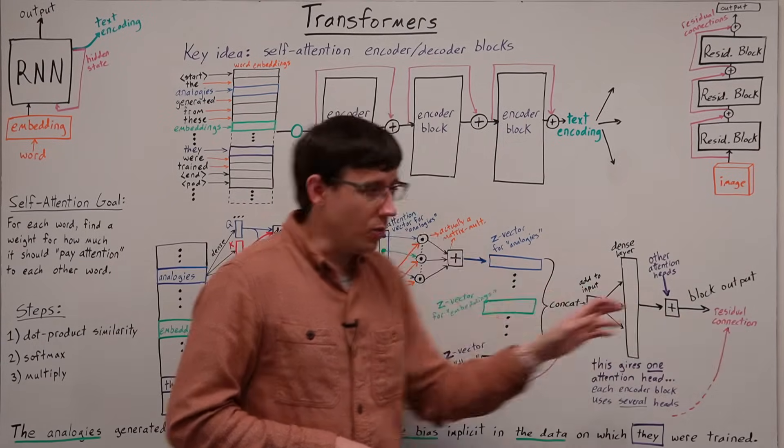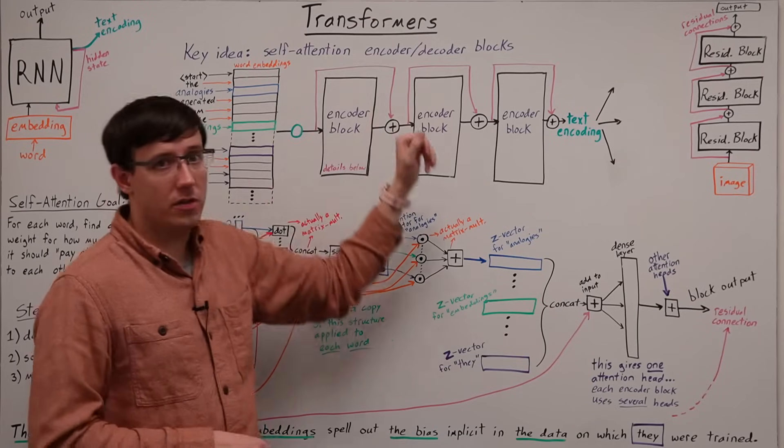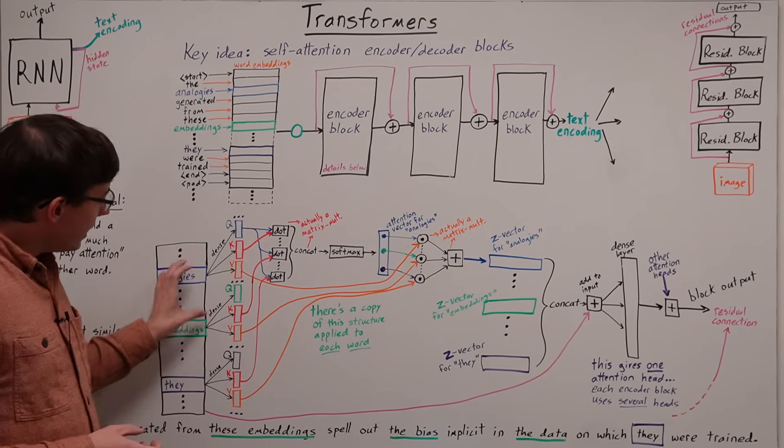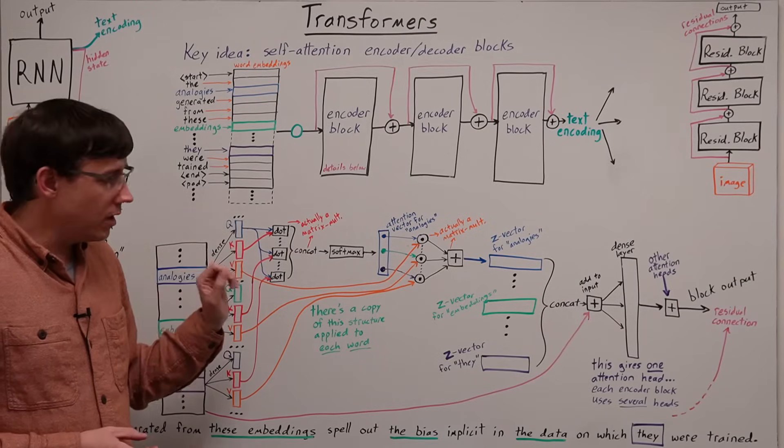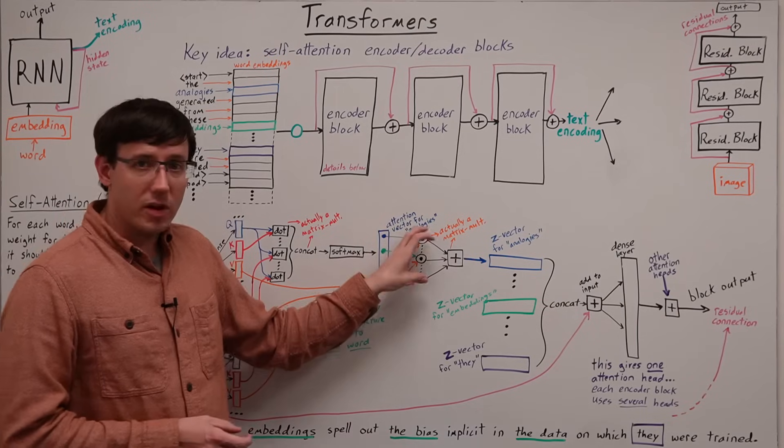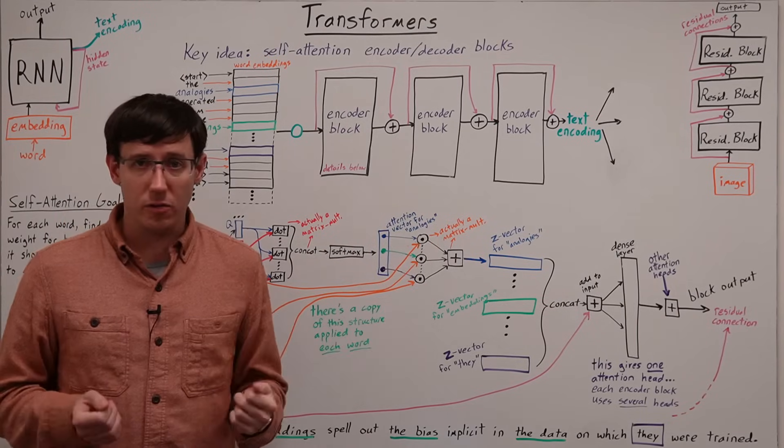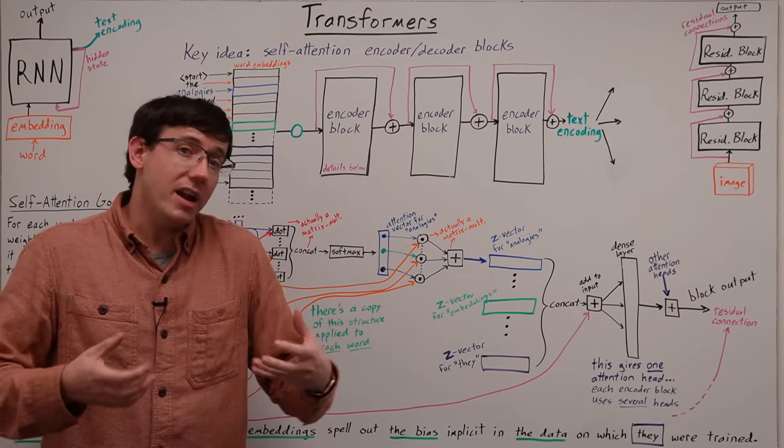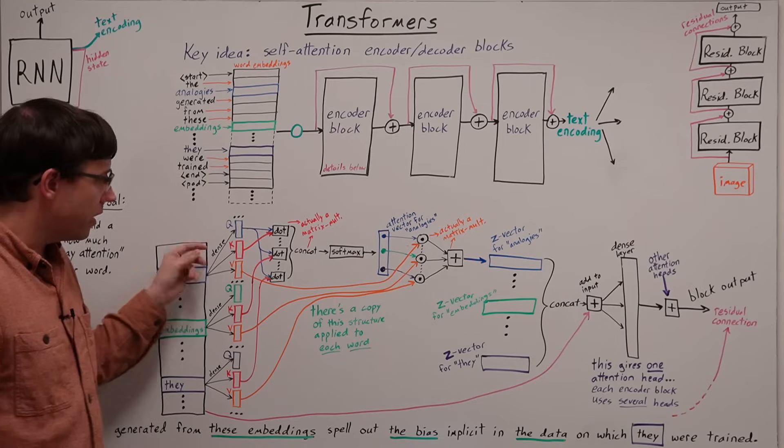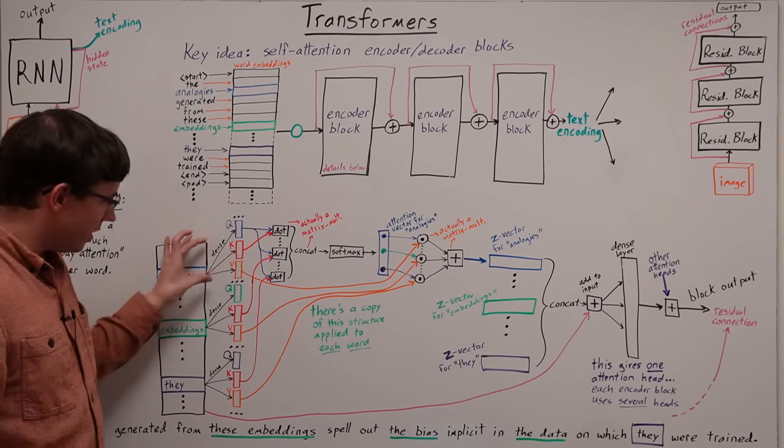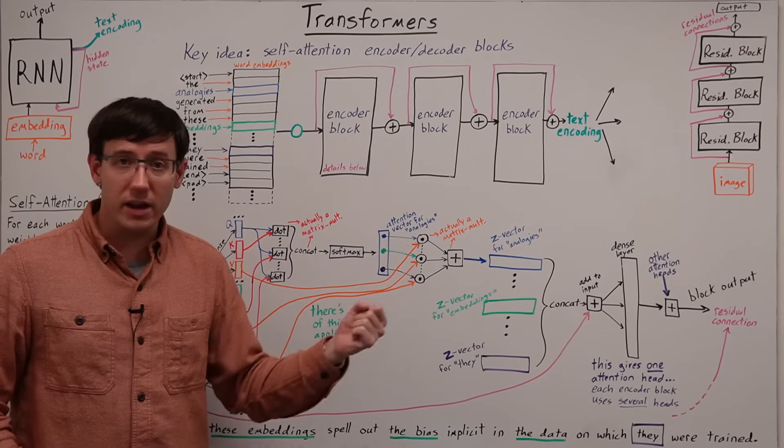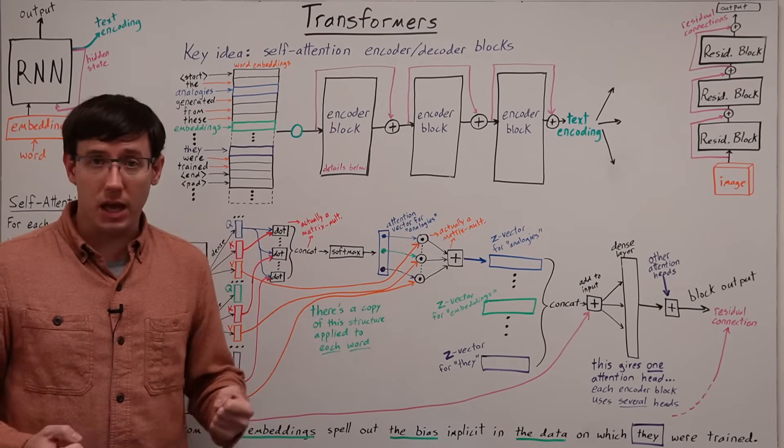which can then be combined with the skip connection that goes around the block. And so, by taking a dot product of query and key vectors and applying a softmax to produce the weights that we will use to sum up the value vectors, we set the network up with an architecture that allows it to learn, based on the weights it finds for these dense layers, what it wants to pay attention to in each of the attention heads,